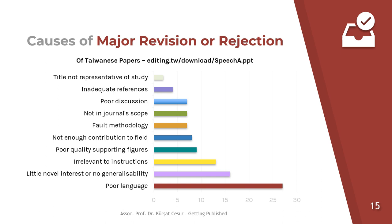What about causes of major revision or rejection? You can see a graph here, and the major cause of rejection is poor language. Other reasons include little interest or no generalizability, irrelevance to instruction, poor quality supporting figures, not enough contribution to the field, faulty methodology, not being in journal scope, poor discussion, inadequate references, and titles not representative of the study.